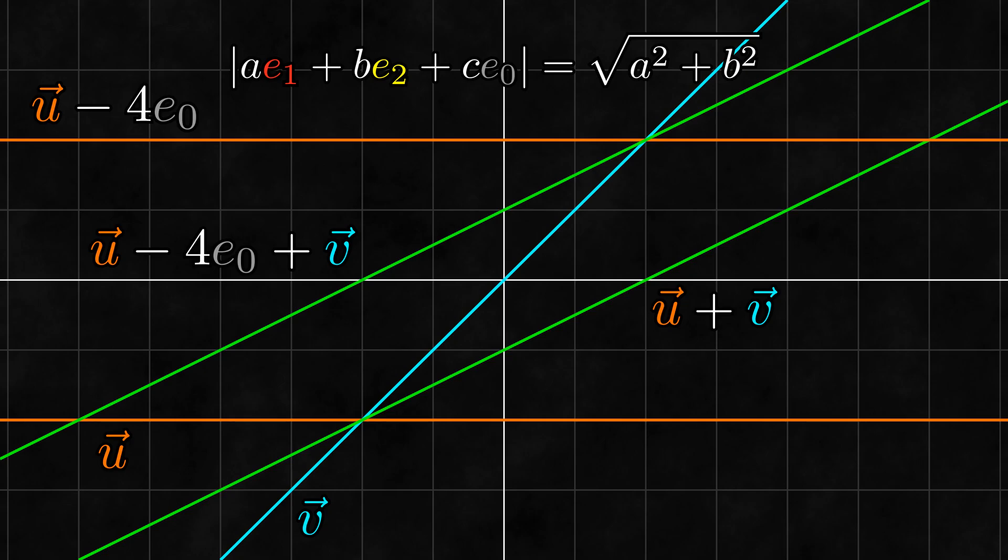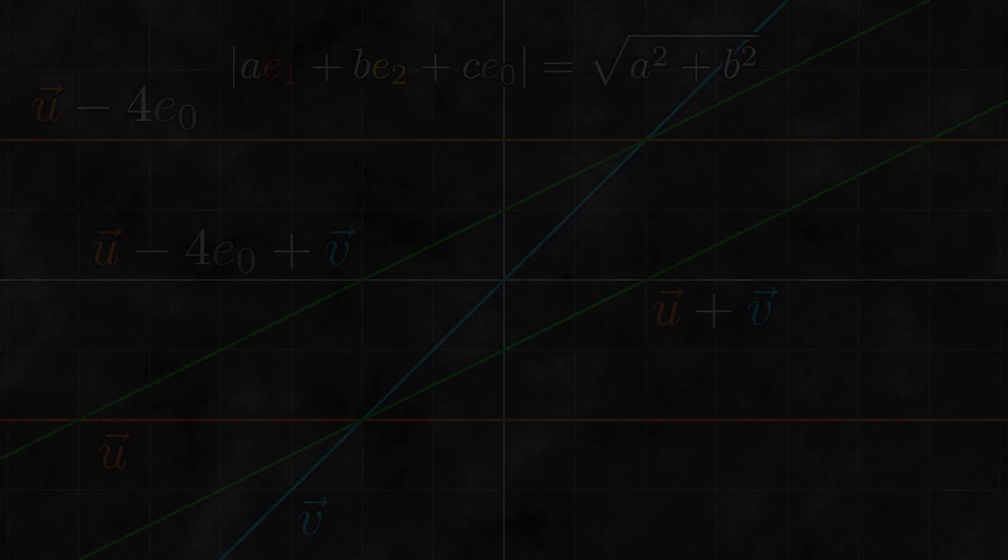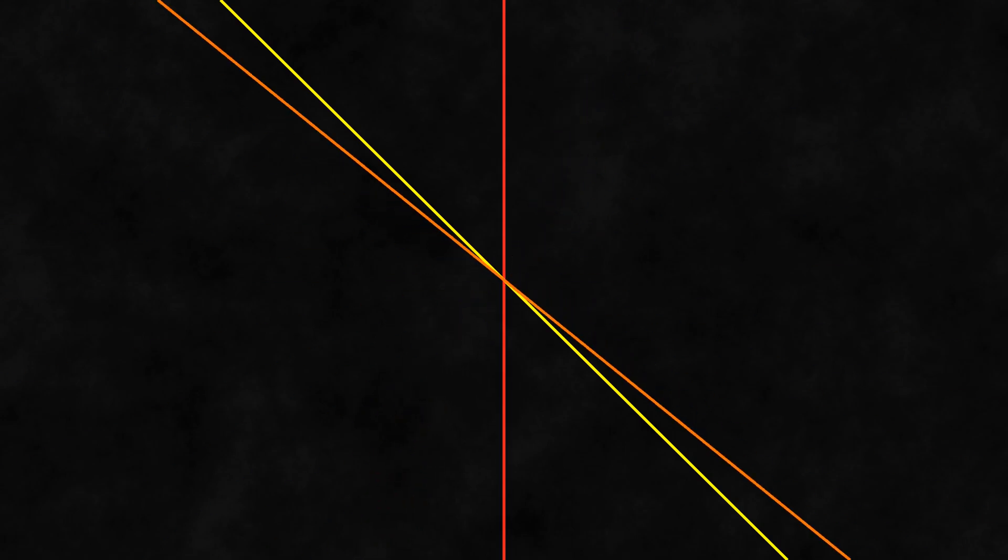Now at this point, you might be wondering what use any of this is. While I think that figuring all of this out is interesting, I will admit that we actually can't do that much with it yet. In the end, pretty much all we can do right now is take two lines and find another line going through their intersection, which isn't really that useful if we're being honest. The real power of this linear space appears once we introduce geometric algebra. When we do geometric algebra on this space, we call it projective geometric algebra, or PGA for short.